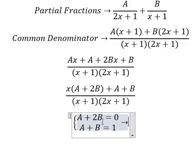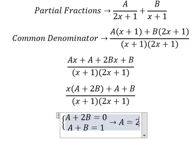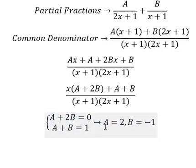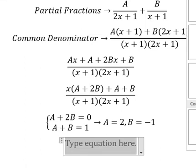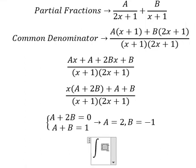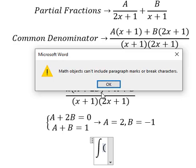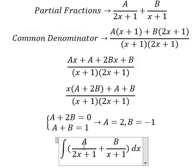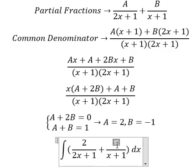Now we need to find the solutions of A and B. So A equals to 2, B equals to negative 1. We substitute these values back.